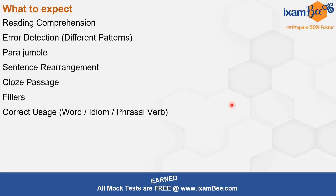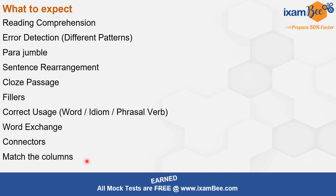You should also expect word exchange — four words are highlighted, their positions are interchanged, and you have to find the correct positions of those words. And lastly, connectors and match the columns. We haven't seen these two in NICL AO till now, but the trend is changing and we are seeing them in banking exams. It's good to practice these so you're not shocked in the exam.